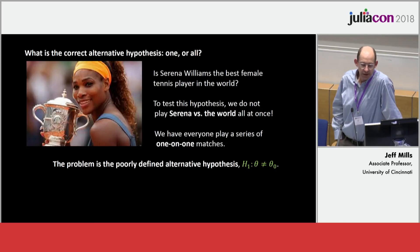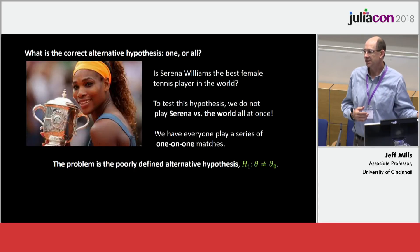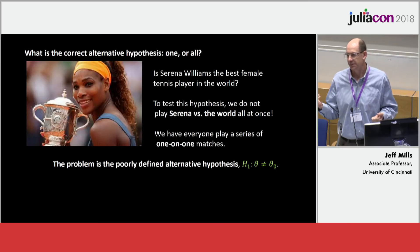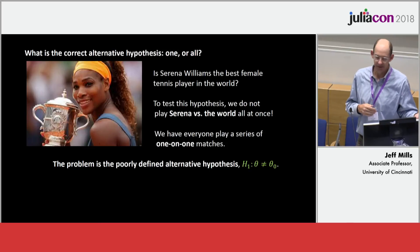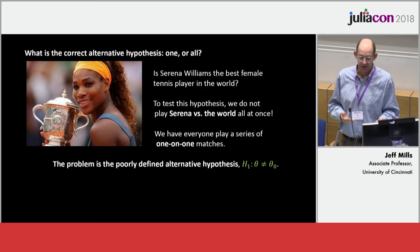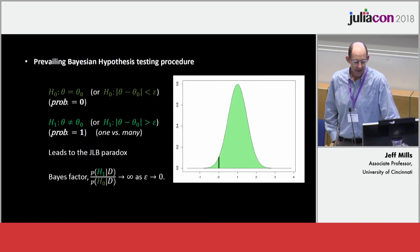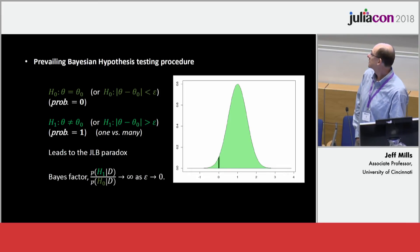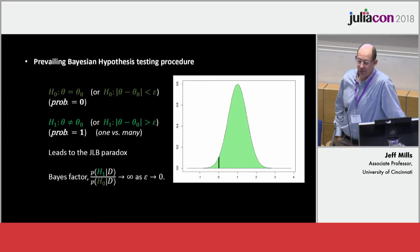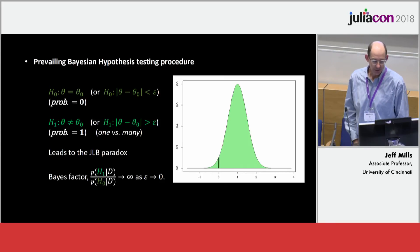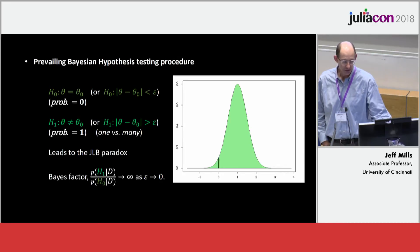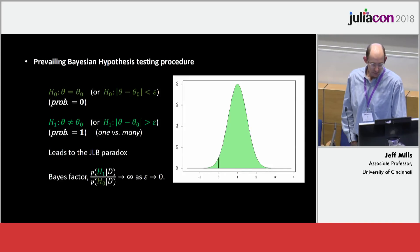If you wanted to test whether Serena Williams is the best tennis player in the world, you wouldn't put Serena on one side of the court and everybody else on the other — you'd be comparing one apple with a whole barrel full of apples. The problem is the poorly defined alternative hypothesis, which is that barrel full of apples. In the standard Bayesian approach, we end up comparing a small region around the null — epsilon neighborhood around zero — against everything else, the light green region. That's the one apple versus the barrel. When you compute the Bayes factor, it's just the ratio of those areas, and it goes to zero or off to infinity regardless of what you do.